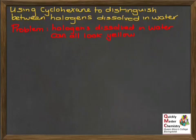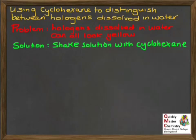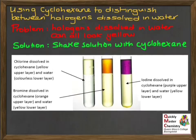The halogens in aqueous solution can all have a sort of yellow appearance, so if you're presented with an aqueous solution of a halogen it can be difficult to determine which halogen is present. We need a way of testing to see which halogen is present. The answer is that we can shake the solution with cyclohexane or another non-polar solvent. When left to settle, the cyclohexane forms a separate upper layer floating on top of the water, giving a lower aqueous layer. Whereas the aqueous solutions all showed yellowy colours, the cyclohexane upper layer gives quite distinctive colours for each halogen.